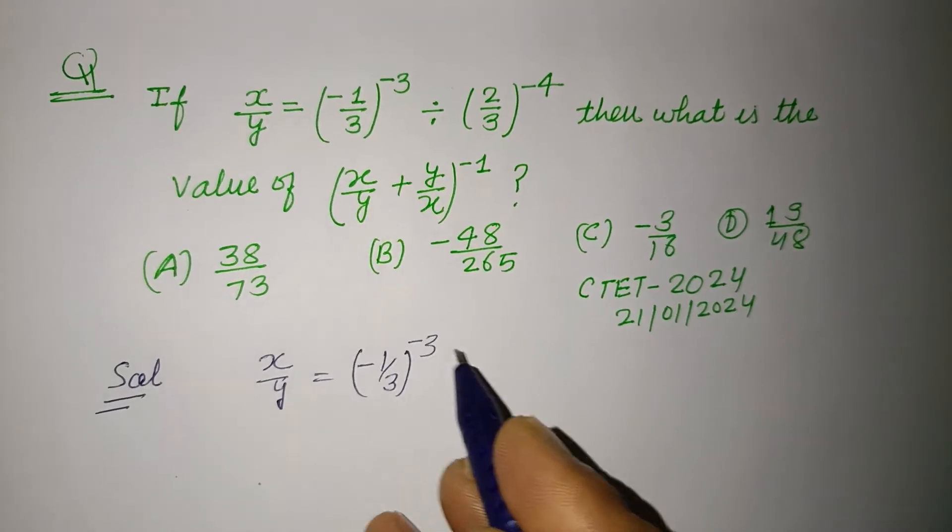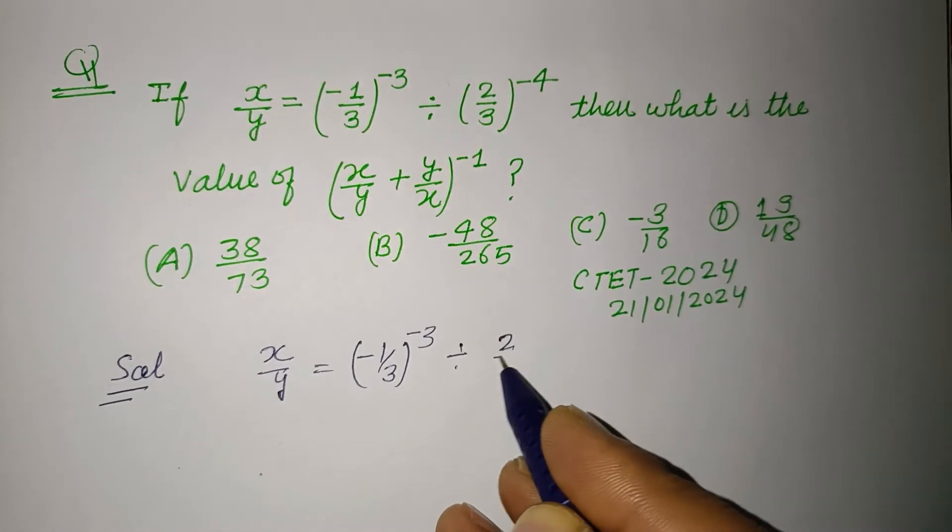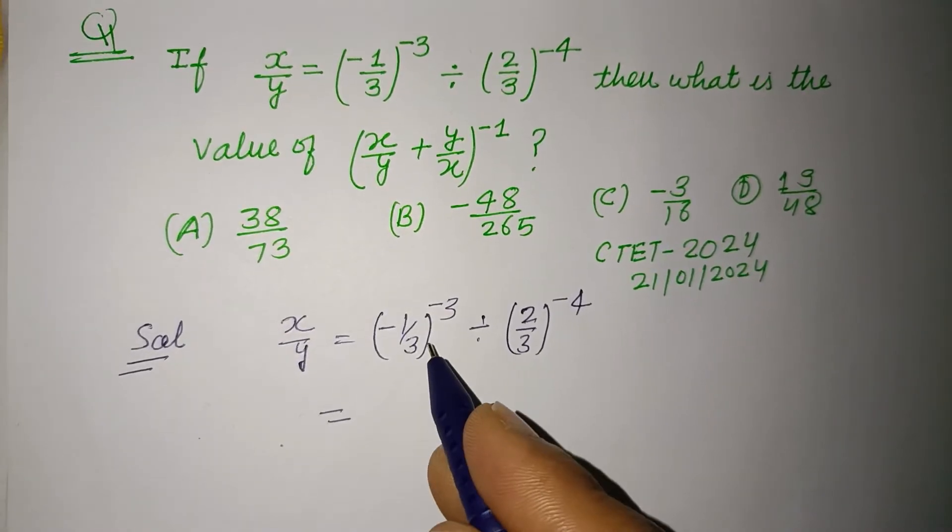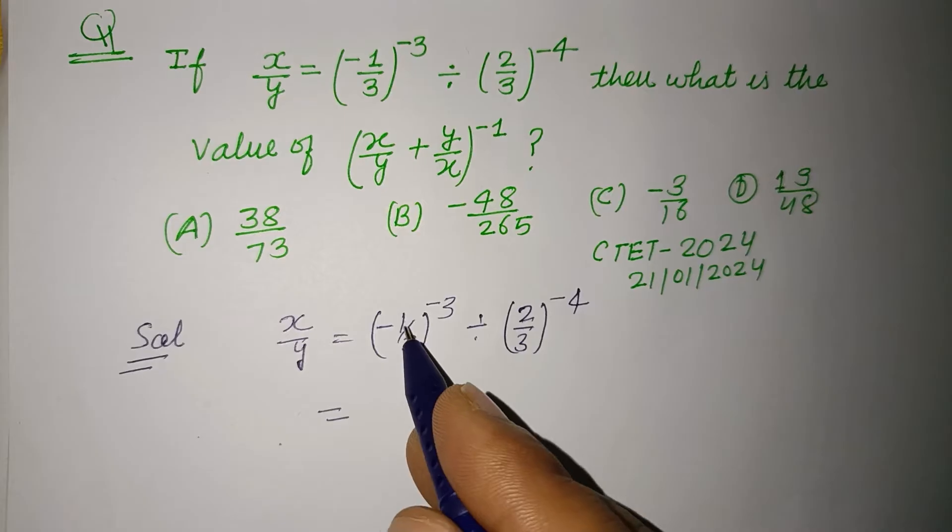So when we reverse this number, the sign becomes positive, so this -3 sign becomes +3.